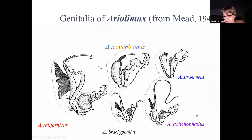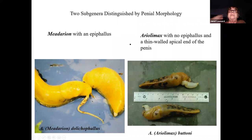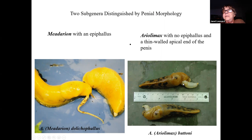So we have two subgenera within Areolimax that are distinguished by the morphology of the penis. Here as an example taken from life — this individual has just finished a bout of sexual activity. Here's the long, narrow penis. And this is Areolimax buttoni from the other subgenus — it has a short, thick penis with a papilla at the end and no long epiphallus. This is how the species have been described.